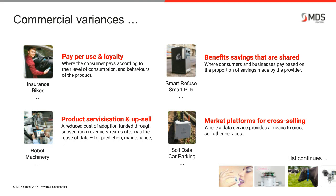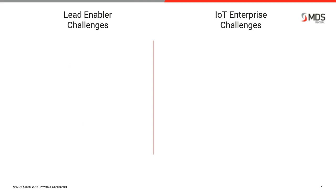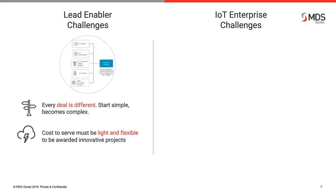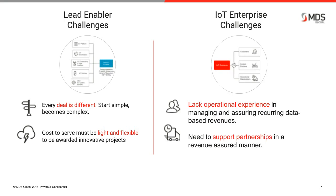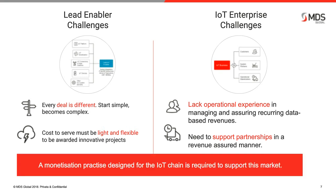This is really just the start of so many different commercial structures, many starting simple and getting more complex and agile to deal with competition, profitability, and innovation. Let's summarize some of these challenges. Both IoT enablement players as well as IoT businesses are faced with a number of challenges. For the enabler, every deal demands a very different monetization approach based on the project, and so the cost to serve has to be light while flexible to be able to win projects. On the other side, IoT enterprises typically don't have the operational experience to manage dynamically recurring payments with assurance on accuracy, fraud, or collections. They must equally support their partners as well as their customers, providing operational and financial transparency so they can operate successfully as part of the project. This is actually about having an assured monetization practice to support all of this in an integrated or interconnected way.